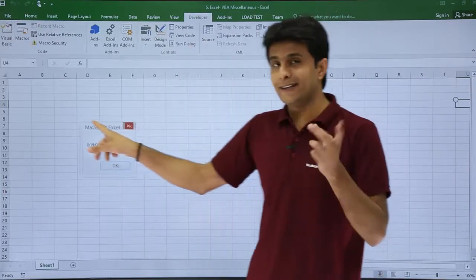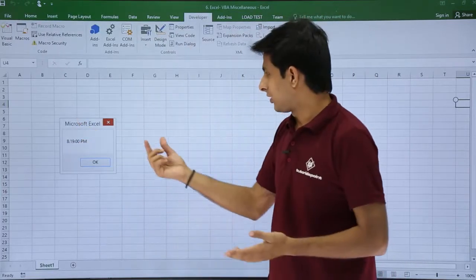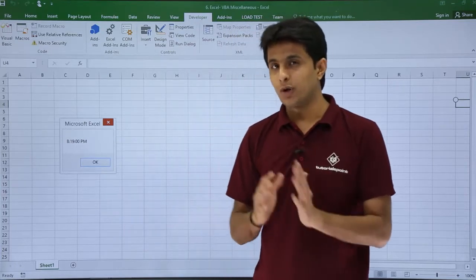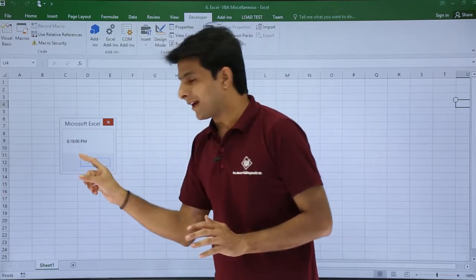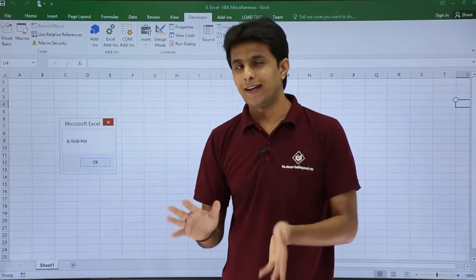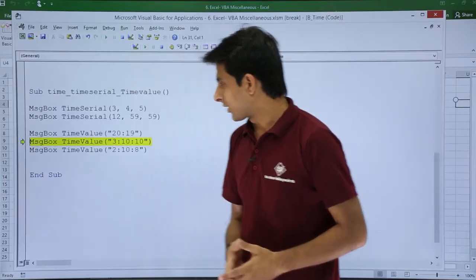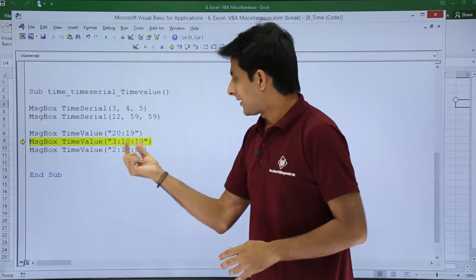If you see, 20:19 has been converted into 8:19 PM. How do you understand which AM or PM? For your understanding they have given us PM there. If it was not AM/PM they would have given us 20:19 itself. I'll click OK. Same way 3:10:10, it will give us 3 hours 10 minutes 10 seconds.